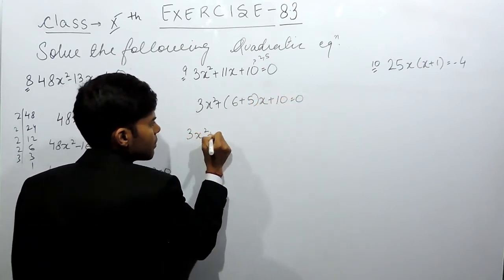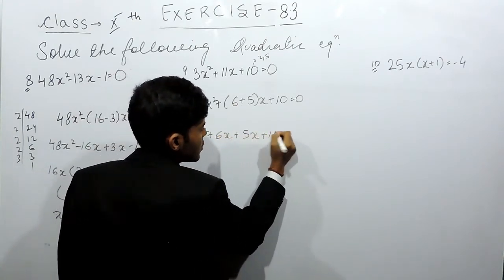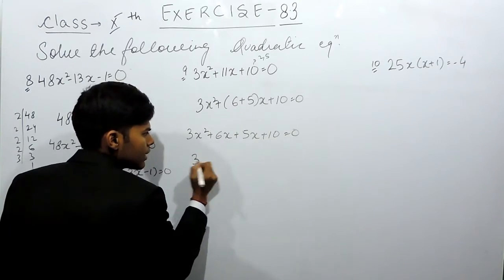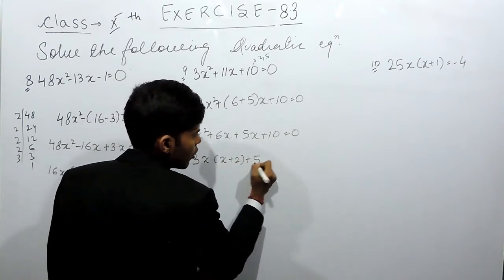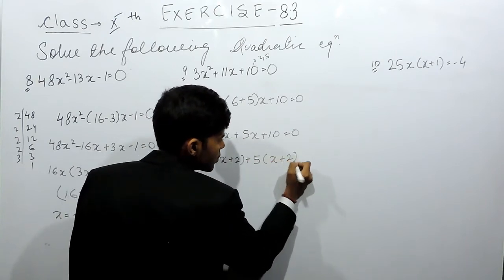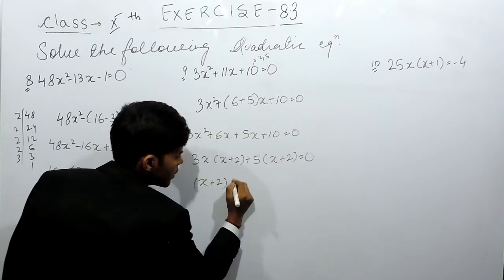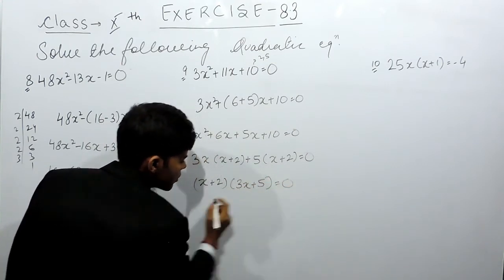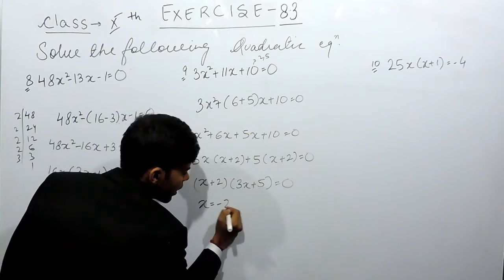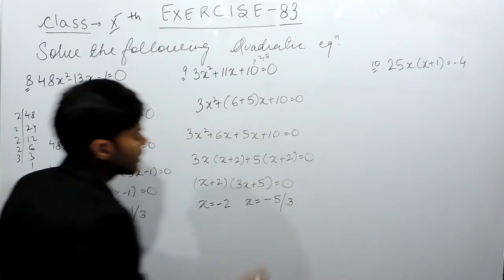3x² + 6x + 10 = 0. 3x common, x + 2, plus 5 common, x + 2 = 0. So x + 2, 3x + 5 = 0. So x = -2 and x = -5/3.